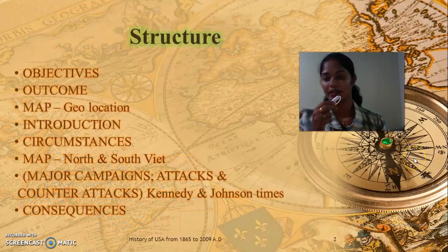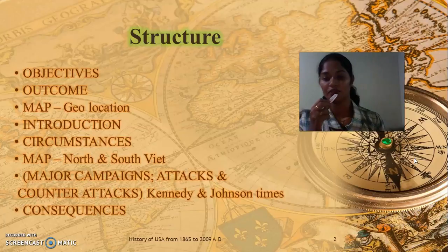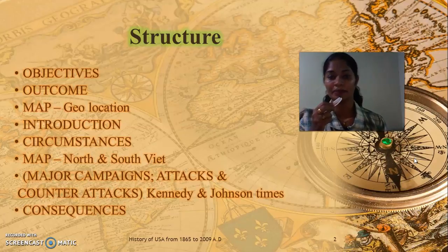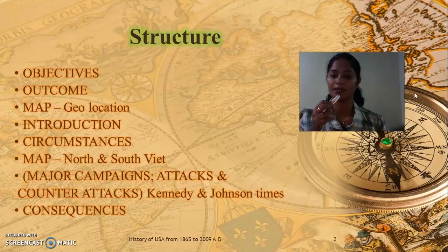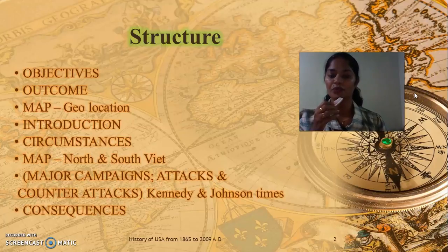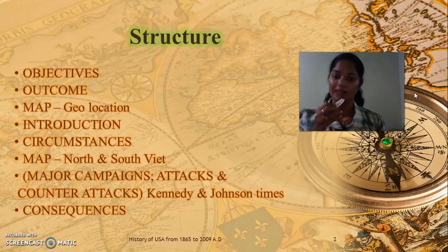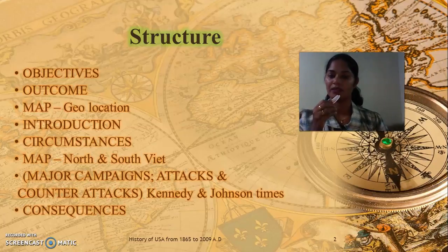This is the structure — the contents I will be sharing in this class: first, objectives; outcome; geographical location map of Vietnam; introduction; circumstances which led to the outbreak of the Vietnam War; the map of North and South divided Vietnam; then major campaigns including attacks and counterattacks done by the warring powers — America and Russia — during the time of Kennedy and Johnson's presidency; then consequences left by this Vietnam War.